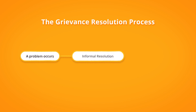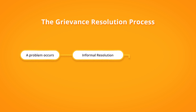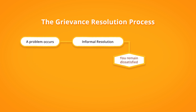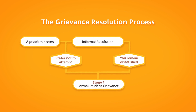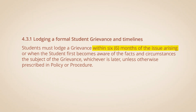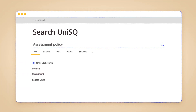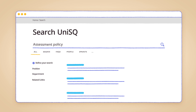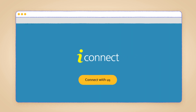Hopefully, by the end of this process, you've been able to work with the staff member to address your concerns. But if you're feeling dissatisfied with the outcome, or prefer not to attempt informal resolution, then you might decide to lodge a formal student grievance. University procedure allows you to submit your grievance within six months of the issue arising, but we recommend lodging your case as early as you can. Some policies have their own specific timeframes, so if you're unsure what applies to your situation, you can contact iConnect for advice.